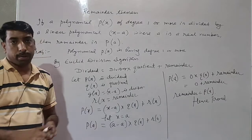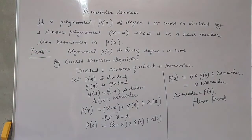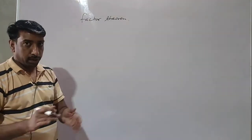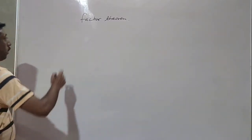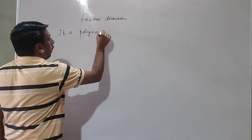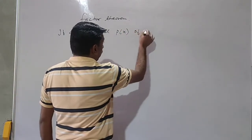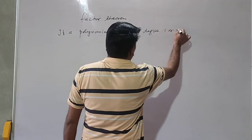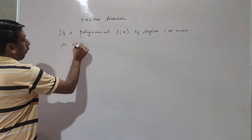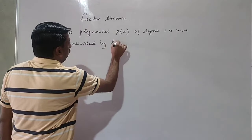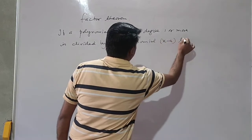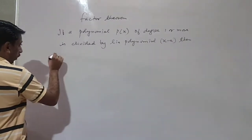Now we will discuss about the factor theorem. In the factor theorem, we first take the statement of the remainder theorem. If a polynomial P(x) of degree one or more is divided by a linear polynomial x minus a, then two statements arise — two conditions will be there.